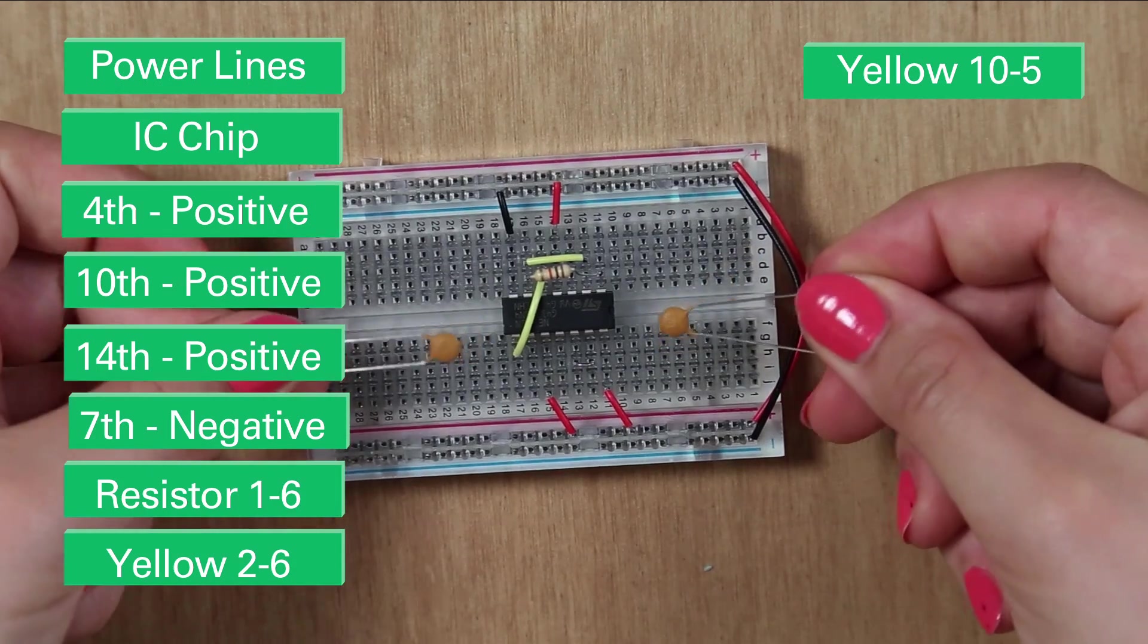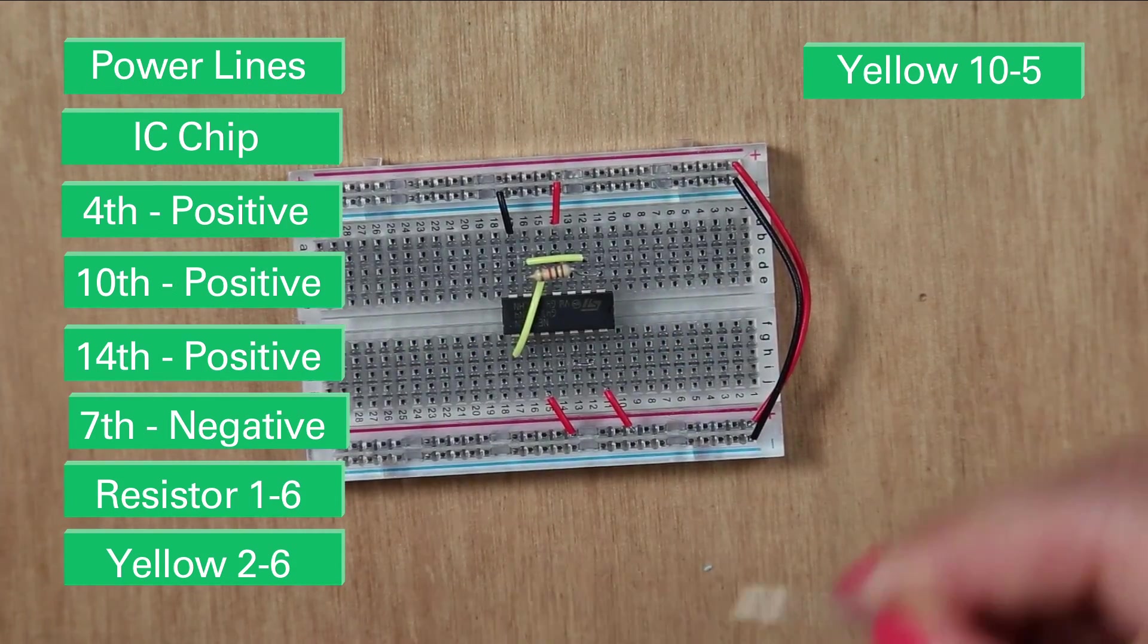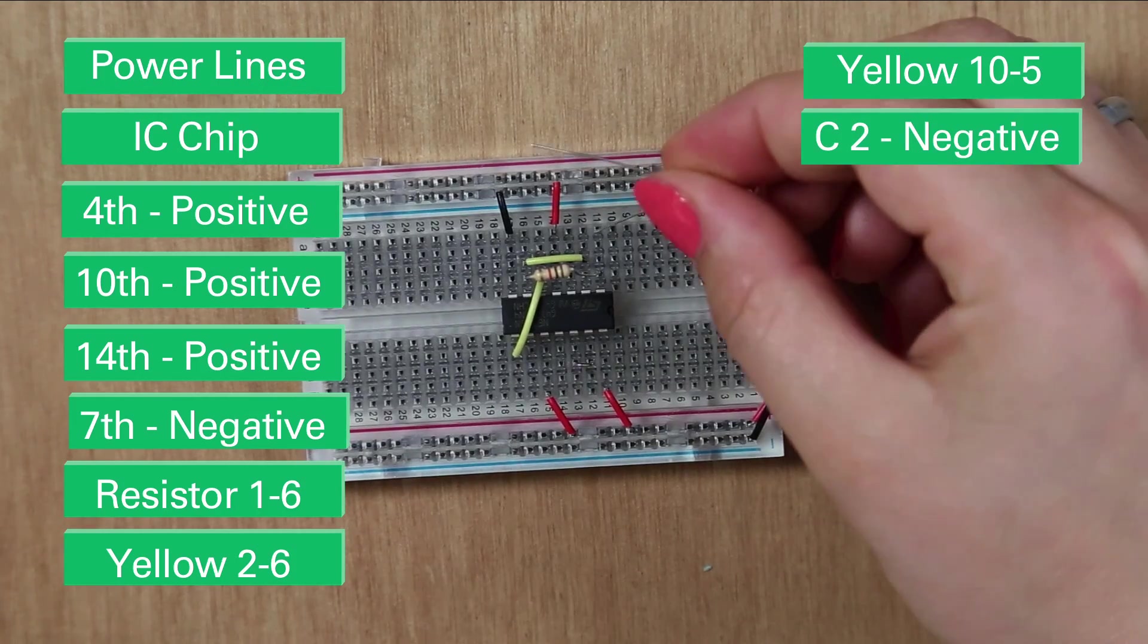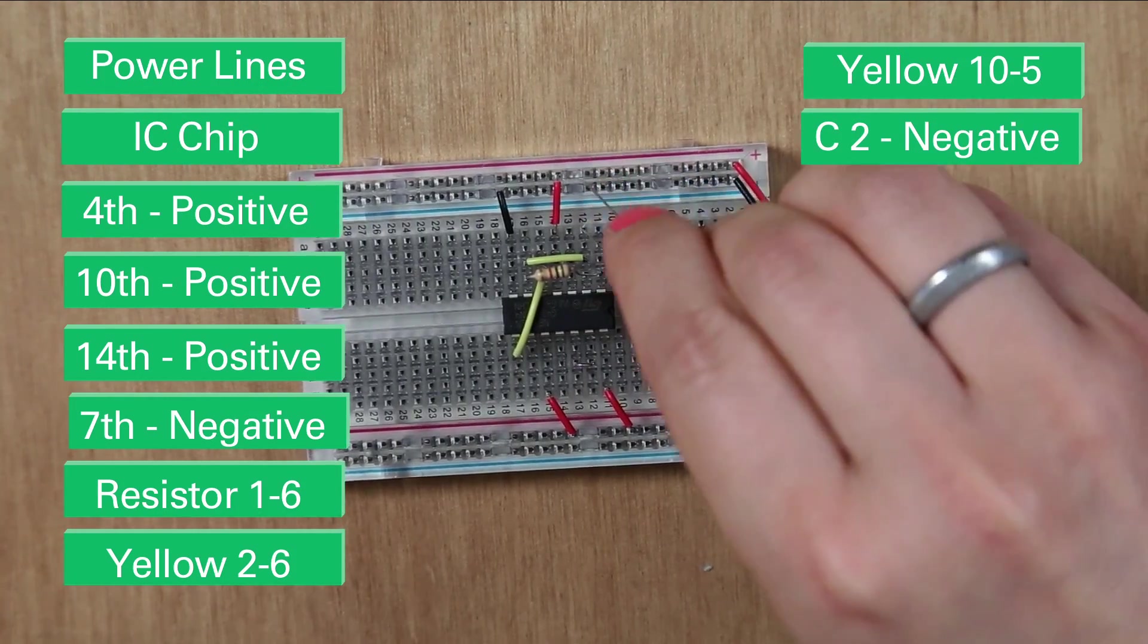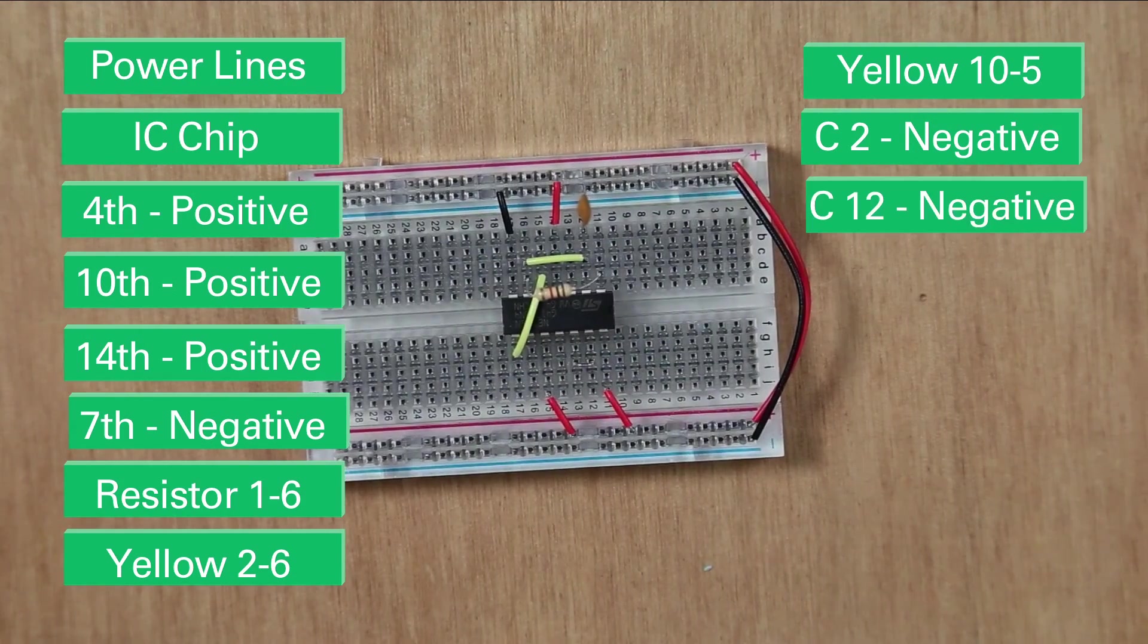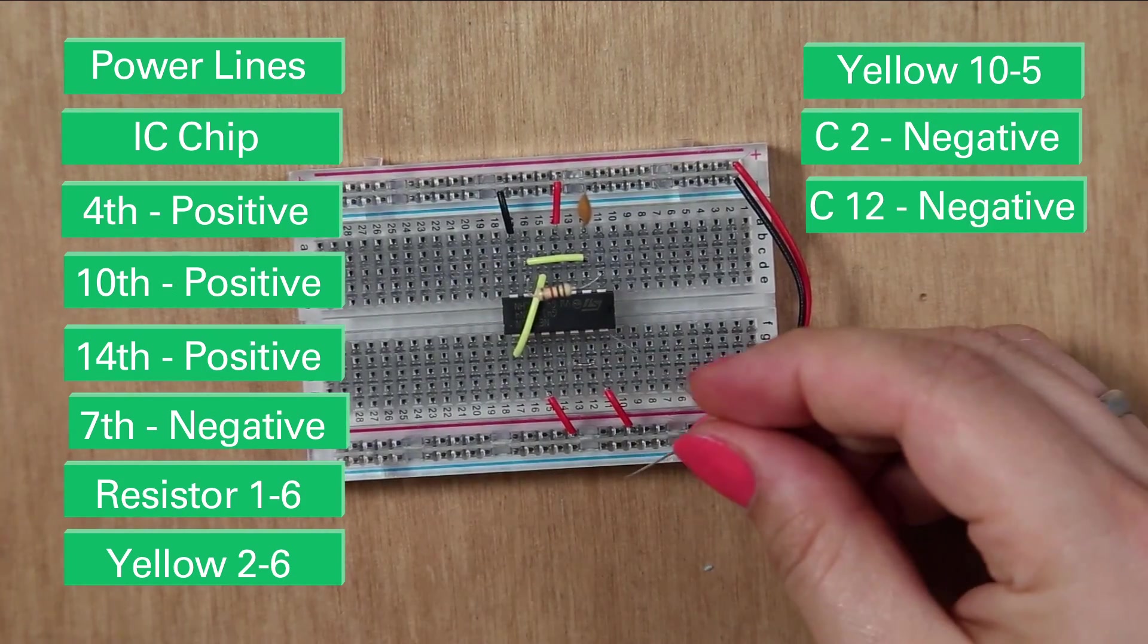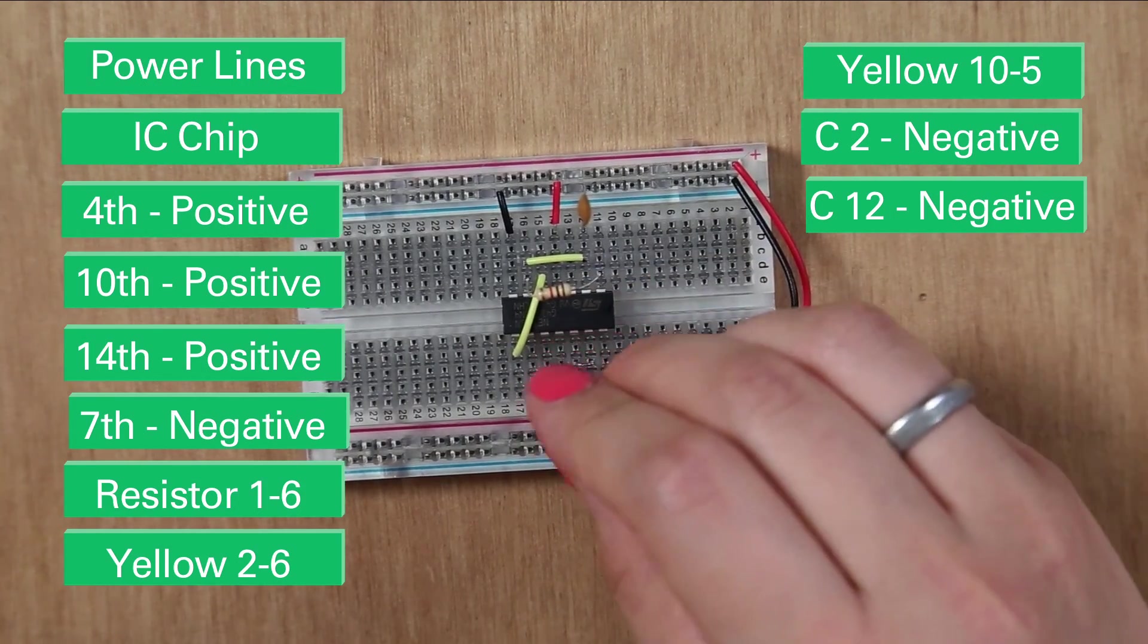So the next bit you want to put in are your capacitors. So these are your ceramic ones. So you want to put one in, in pin 2. So 1, 2 into your negative. So you want both the capacitors to attach to negative. And then pin 12 to negative. So we can count backwards as well. So 14, 13, 12. Just put that into your negative.